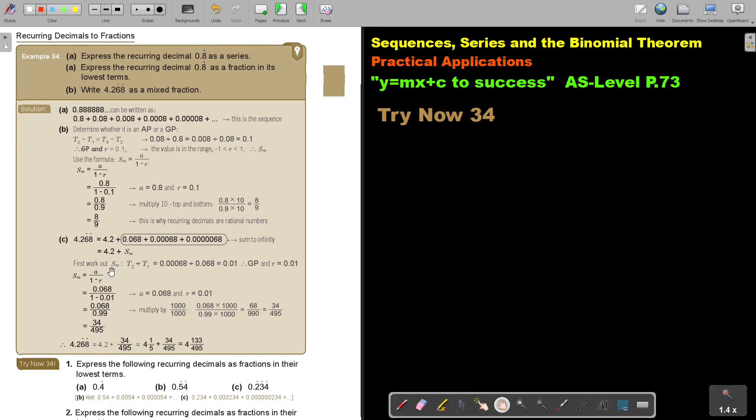So first work out S to infinity. So T2 divided by T1, I get my value of R. I substitute it in and I get 34 over 495. So don't forget that it's 4.2 plus that 4.2, that beginning part. And I then get this mixed fraction.